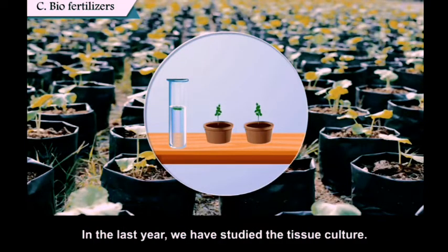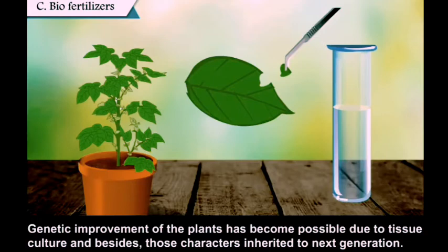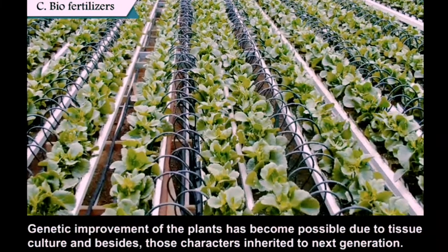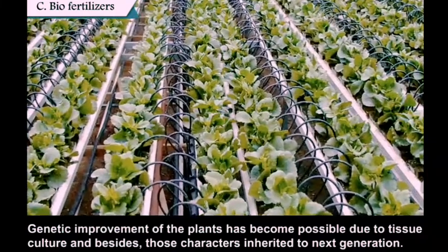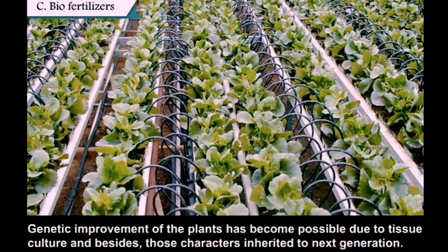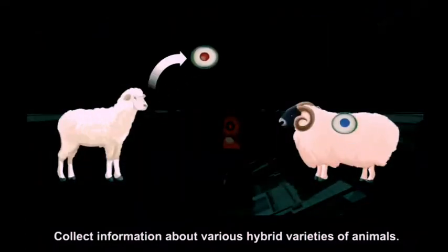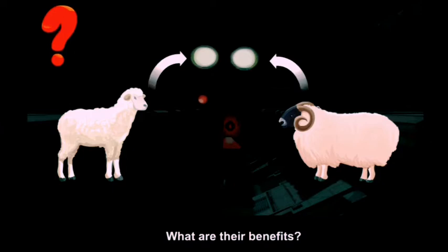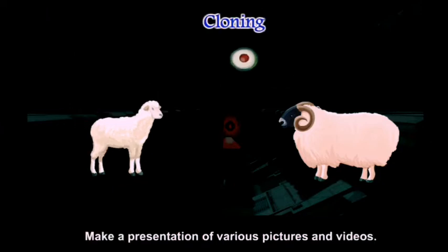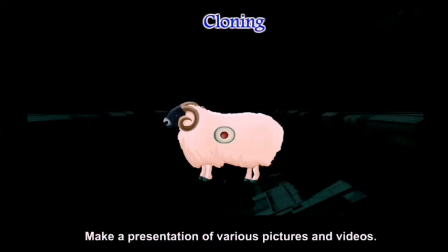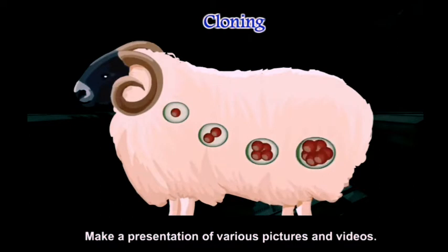Genetic improvement of plants has become possible due to tissue culture, and such characters are inherited by the next generation. Use of ICT: collect information about various hybrid varieties of animals and their benefits, and make a presentation using pictures and videos.